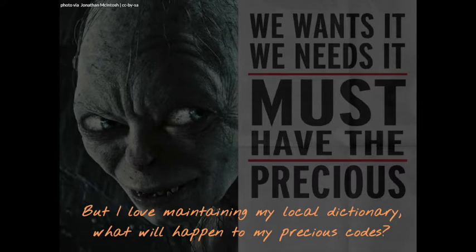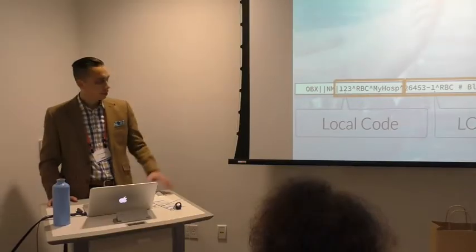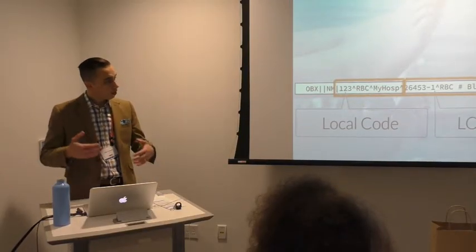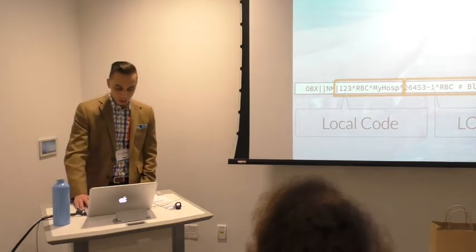You might wonder what happens to your local codes if you adopt this standard. All of the structural standards have a mechanism for sending both the local code and the standard code simultaneously. Most people do this through a mapping table linking local codes to standard codes and communicating them both. Your local code can be used for display or to drive workflow, while the standard code allows the downstream recipient to understand what the measurement is without having to know everyone's idiosyncratic local codes.